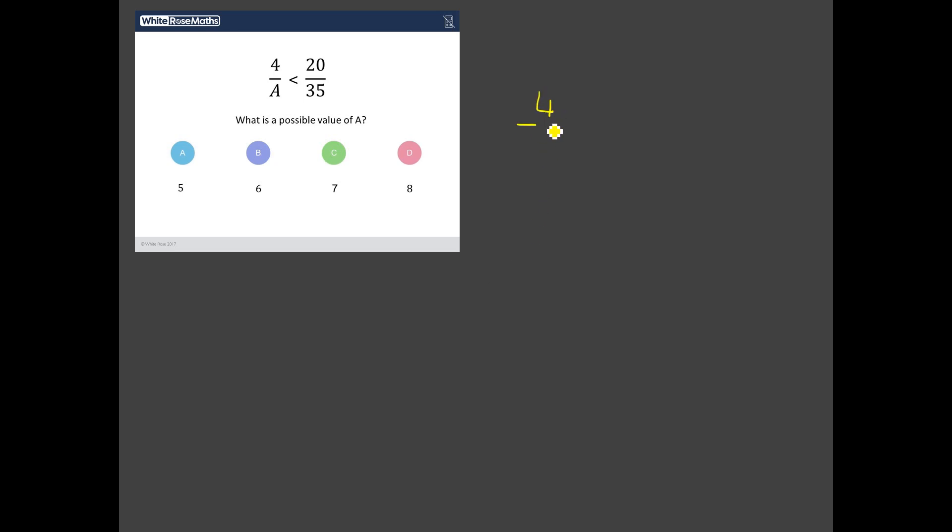So let's have a look here. We've got 4 over something. And we've got this sign here. And we've got 20 over 35. Now the first question is, what on earth does this sign mean here? Well, that means less than. When it's pointing that way, that sign means less than. So we know that this fraction here, 4 divided by A, has got to be less than 20 over 35.